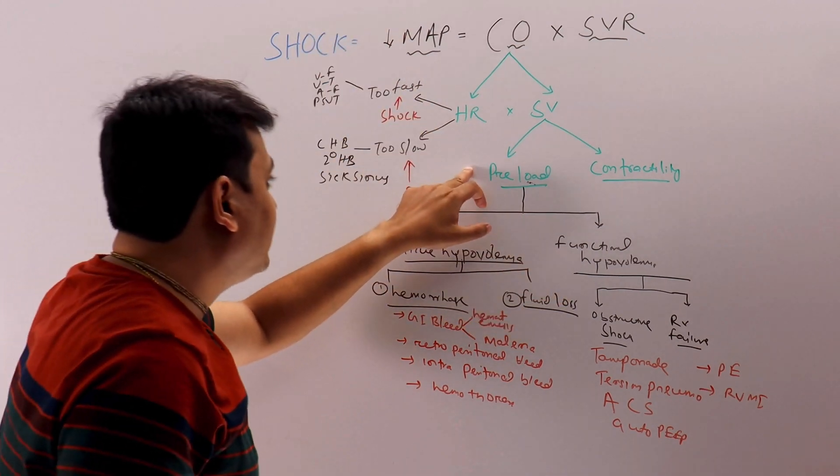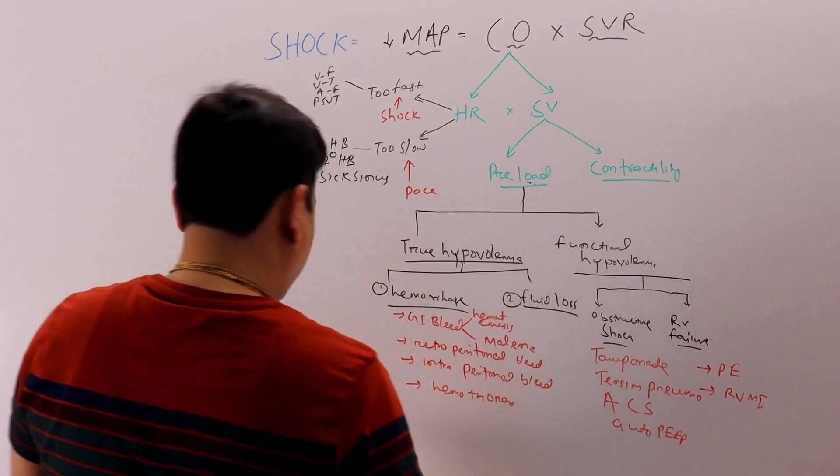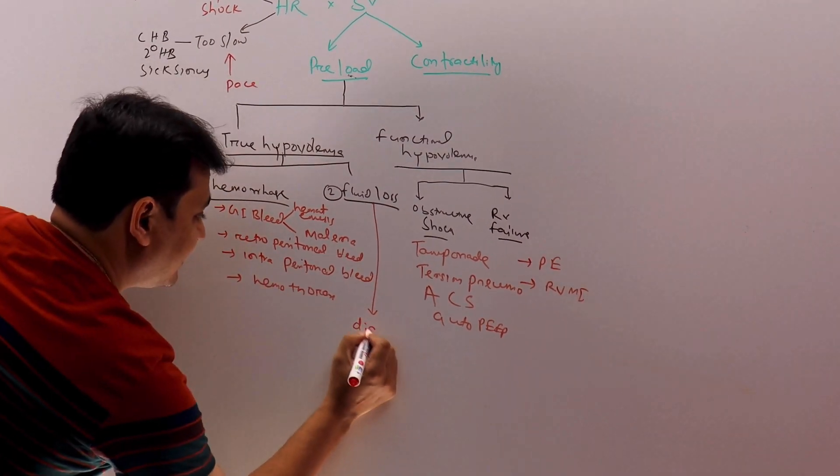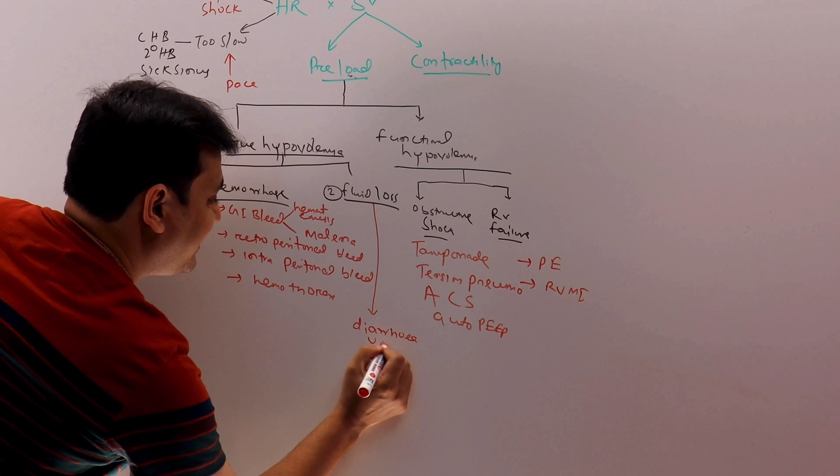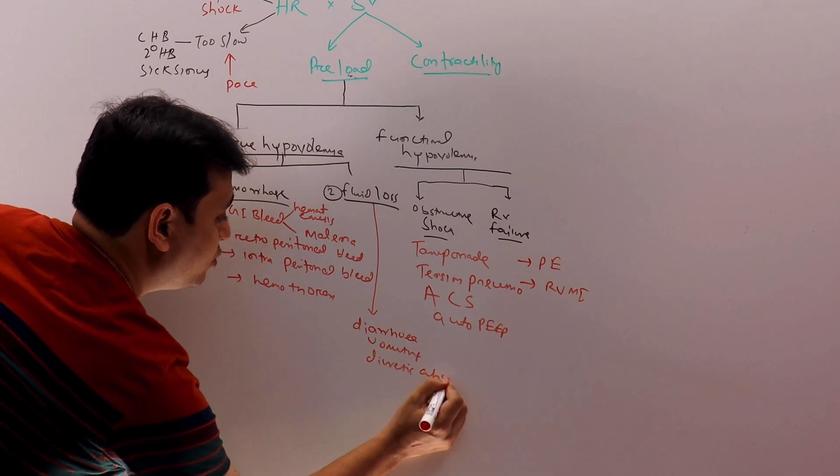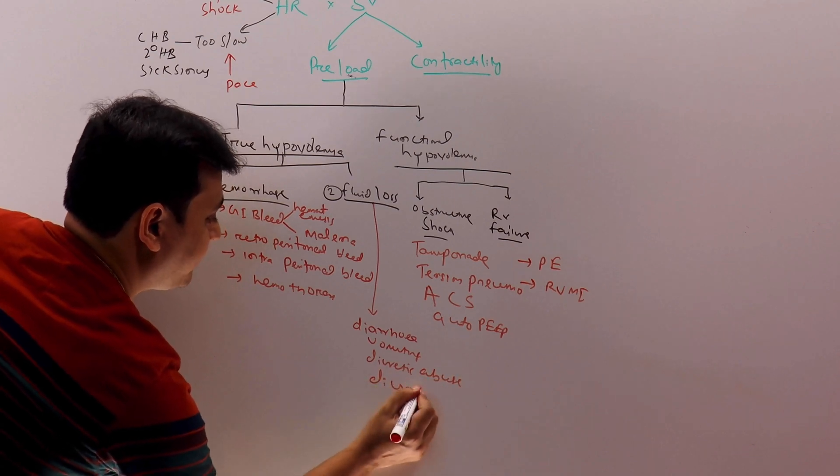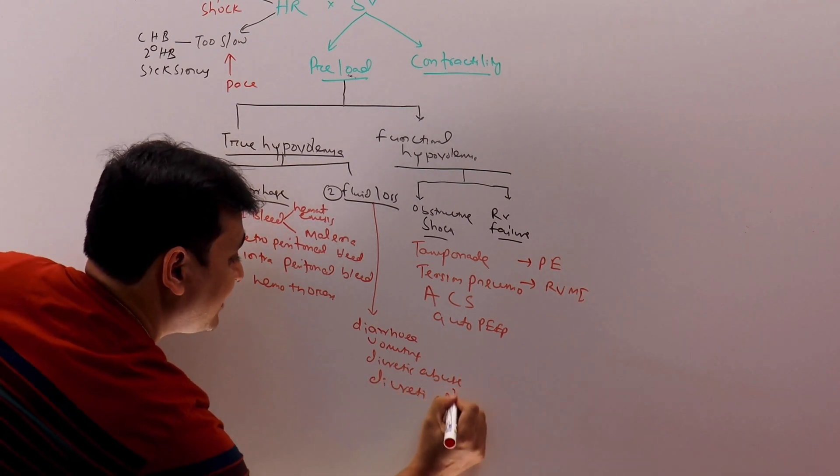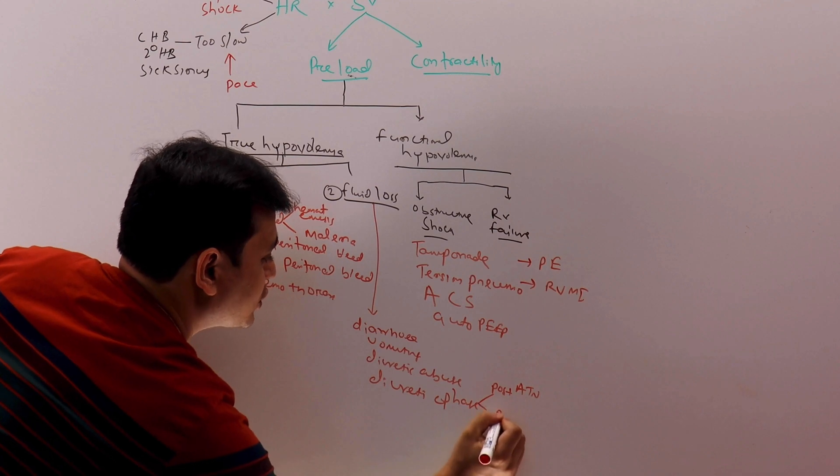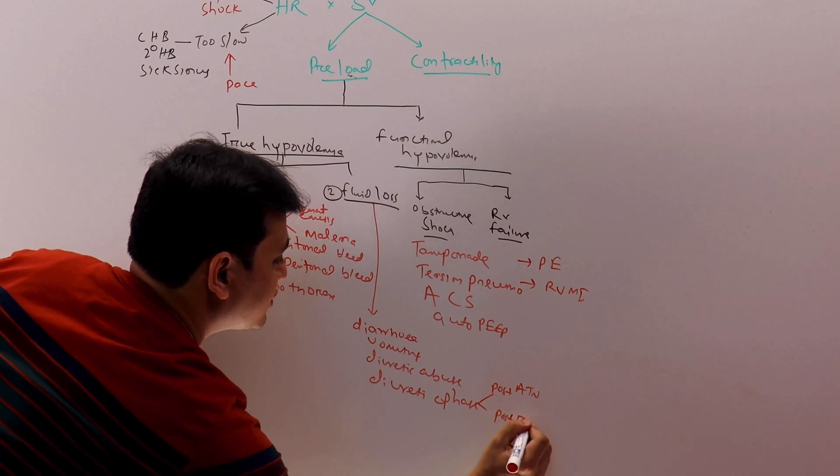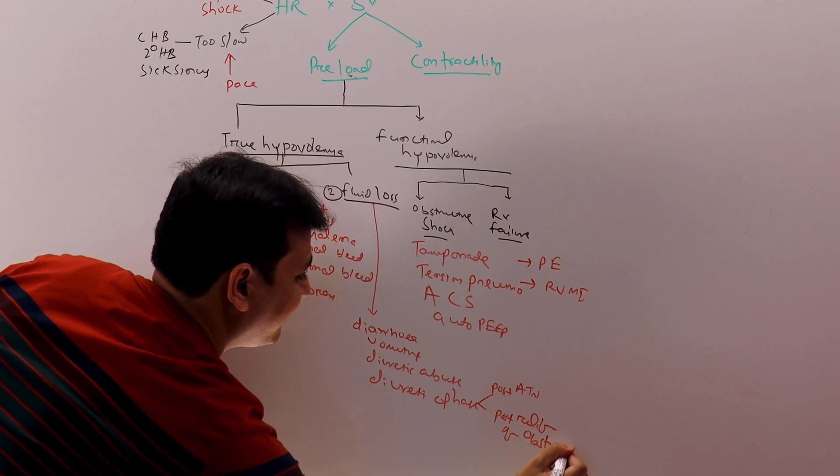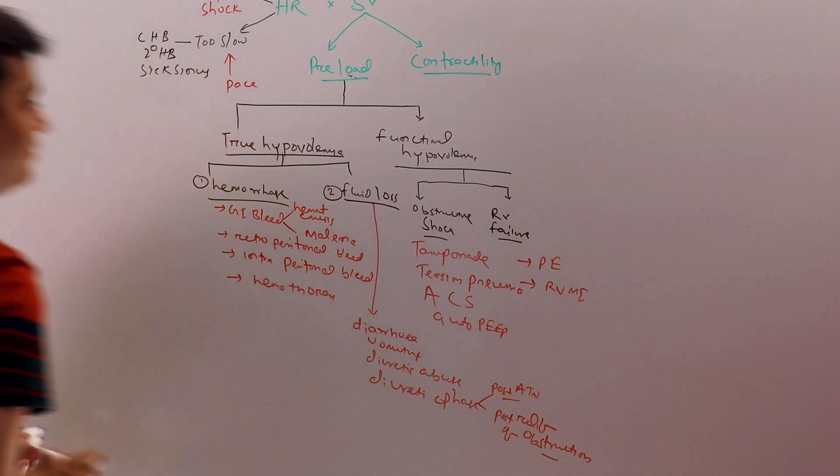So here we have missed one thing - this is the fluid loss. The fluid loss can be diarrhea, vomiting, diuretic overuse or diuretic abuse. We can have diuretic phase, so the diuretic phase can be post-ATN or post-obstruction relief of obstruction.